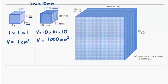So what that means, because these, remember, are exactly the same size, it must mean that one centimeter cubed is equal to 1,000 millimeters cubed.